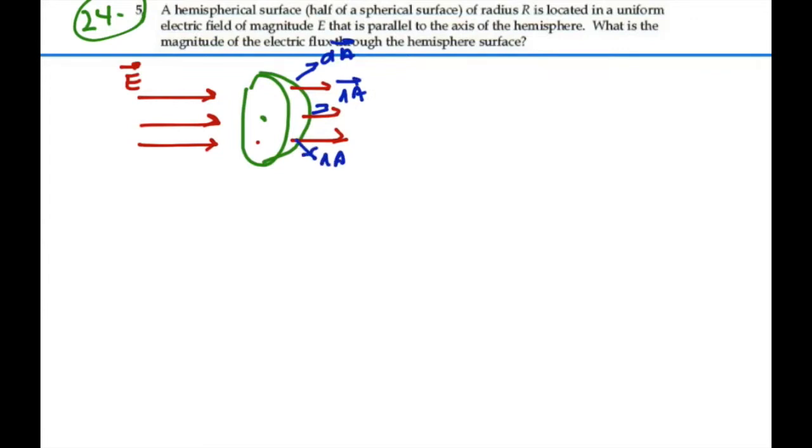So we would need a supercomputer to calculate the flux through this hemisphere based on E dot dA because the dAs are changing their angles everywhere on this surface.